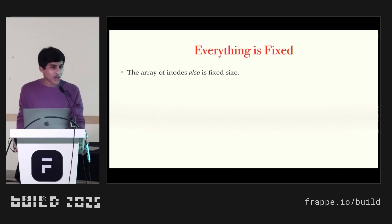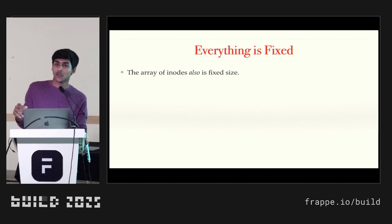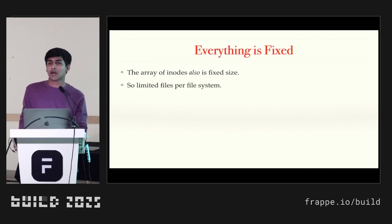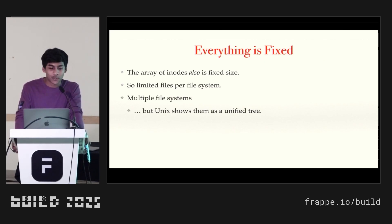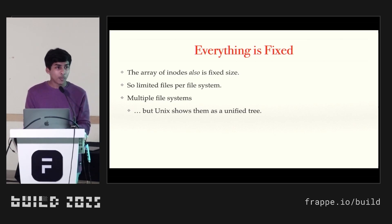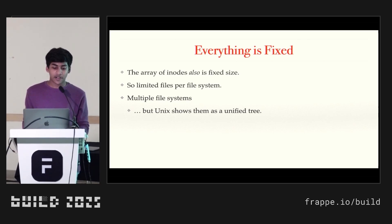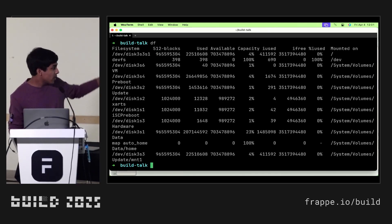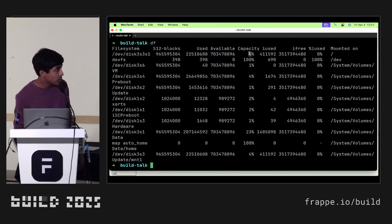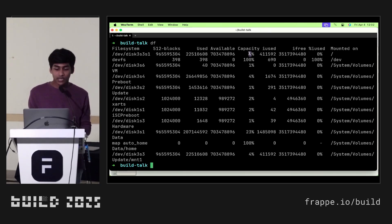The array of inodes is also a fixed size. The inode table — the database of metadata — is also a fixed size. So in one given file system, maybe you can have a couple million inodes. When you finish them, you theoretically cannot create more files on that file system. Unix's clever solution is to have multiple file systems underneath the hood. When you open up Finder on your Mac or File Explorer, Unix combines them together and shows them as a unified tree — but underneath, it's all separate file systems. Using the df command, we can see almost 10 file systems on my Mac. My computer is relatively new, so only 4% of the inodes have been used. When this disk finishes off, Unix will start using another file system, but I'll never know — I can only see the Finder and think it's all one unified file system.